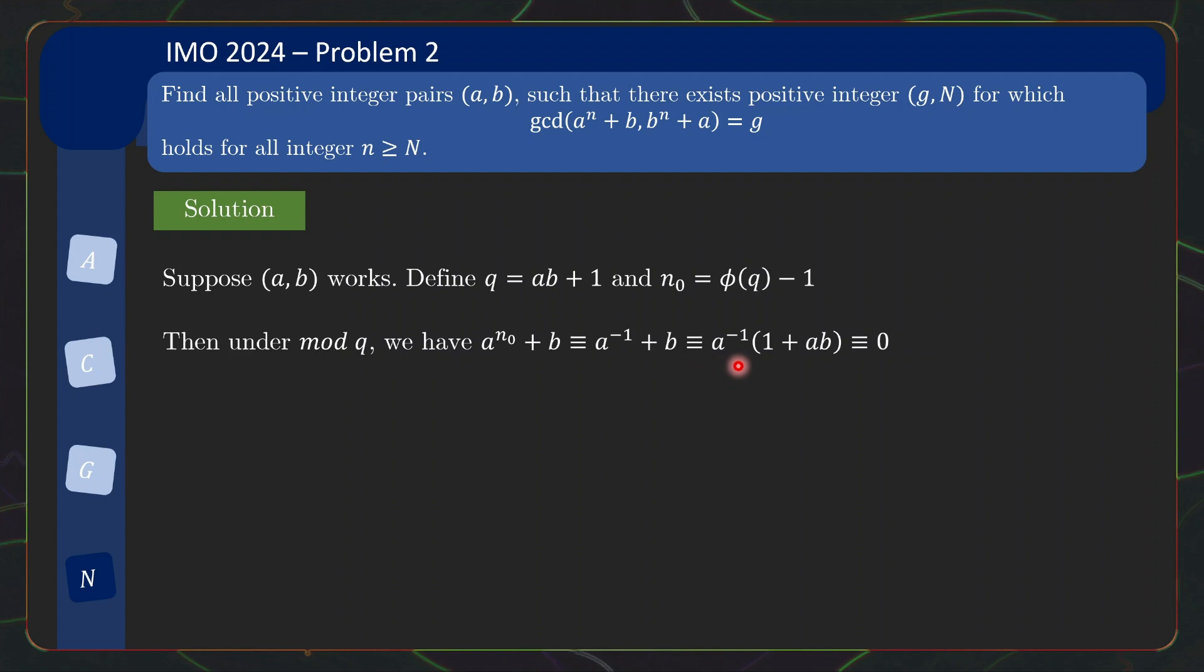So a^{-1} + b, you can take out the a^{-1}, then you get 1 + ab, and by magic, 1 + ab is q, so this is 0.